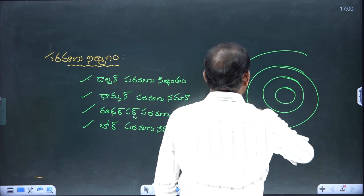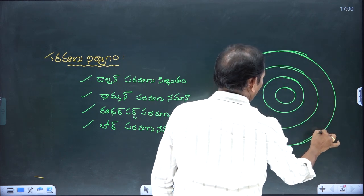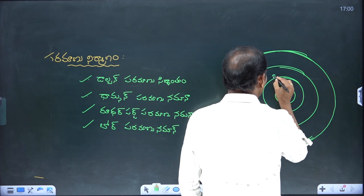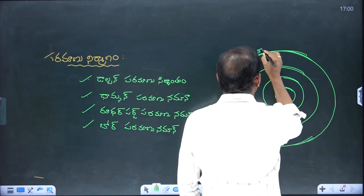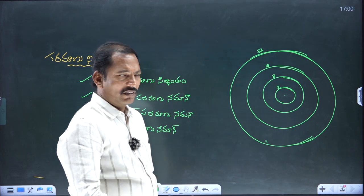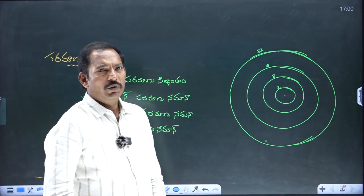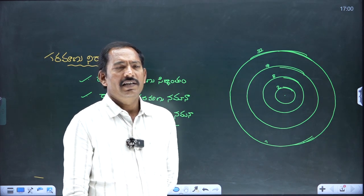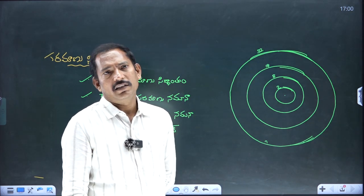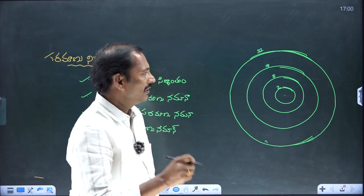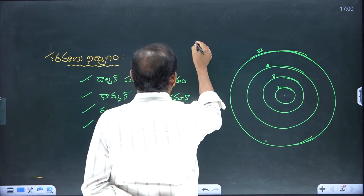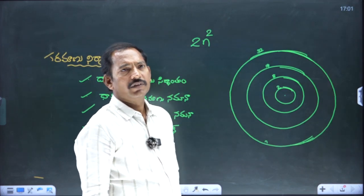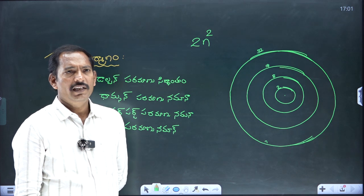There is a 1st orbit, 2nd orbit, 3rd orbit, and 4th orbit. The formula for the maximum number of electrons in each orbit is 2n². This formula is 2n².